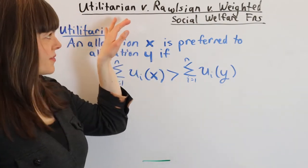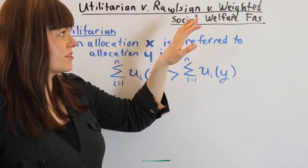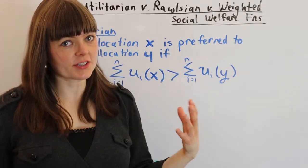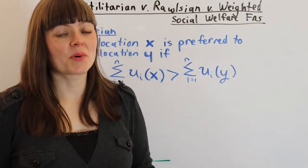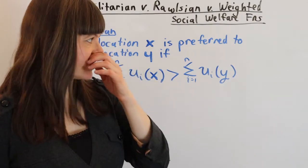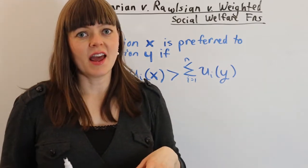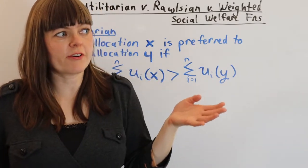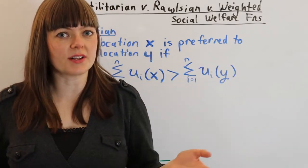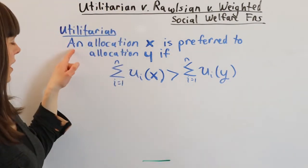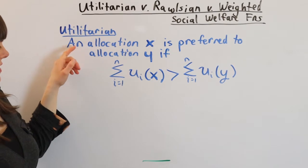In this video I'm talking about utilitarian versus Rawlsian versus weighted social welfare functions and what's the difference between them when looking at different allocations. To begin with, we have the utilitarian social welfare perspective, and that is literally just adding up everybody's utility and weighting everybody's utility equally.